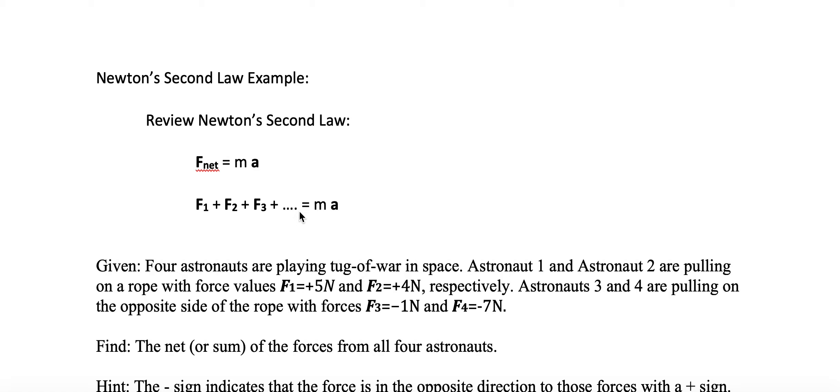If there's just one force, it's F equal to MA. M is the mass of the object being accelerated. Notice that M is not bold, so we don't really care about the direction for mass — we just need to know what the mass is, how many kilograms the object is.